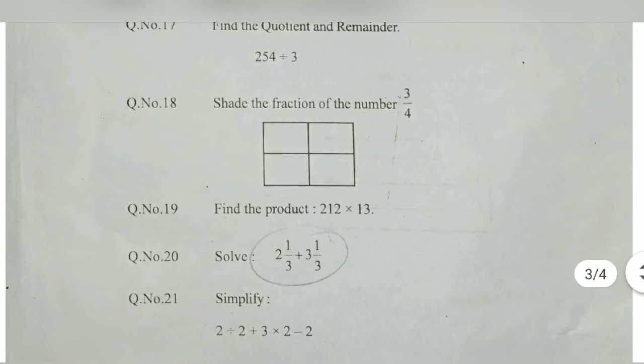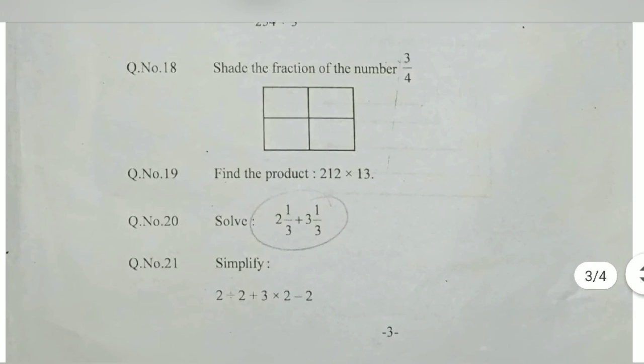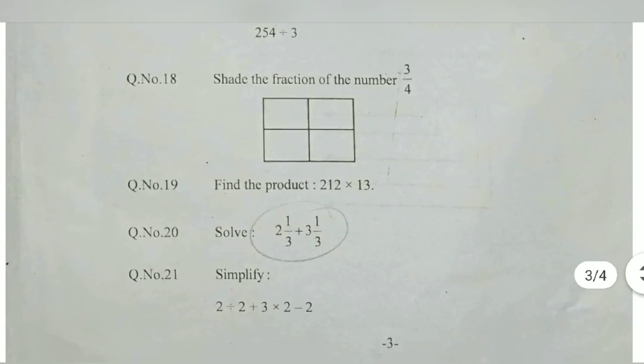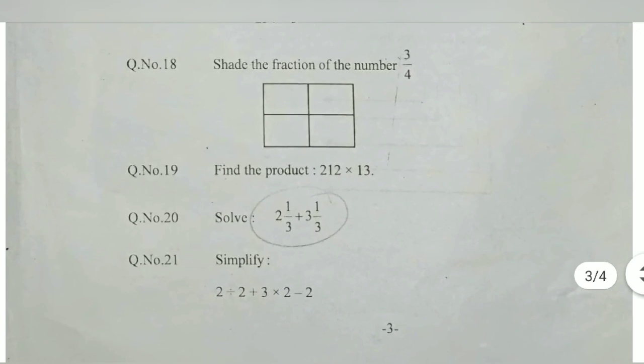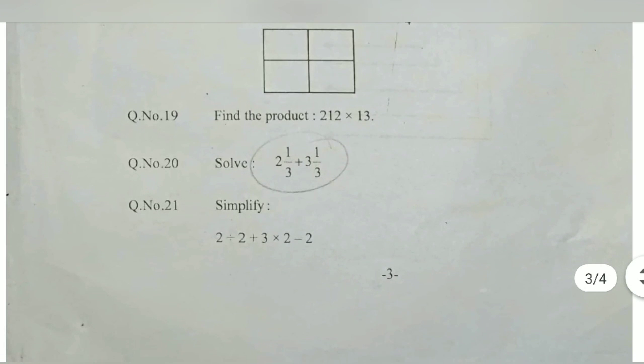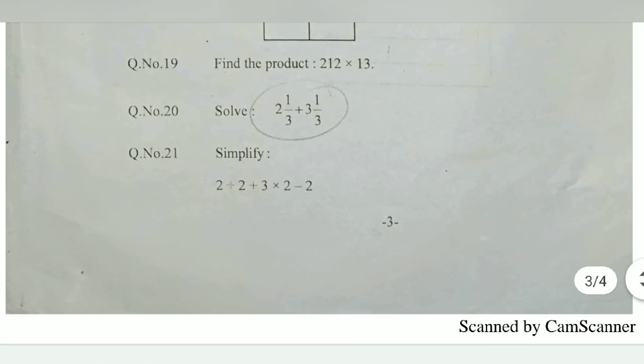Find the quotient and remainder, that is easy only. Shade the fraction of the number 3 by 4 - total four fractions, four parts is there, then three parts you shade. That is 3 by 4 of the given shape. Find the product of 212 into 13, multiply 212 into 13.